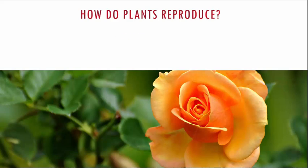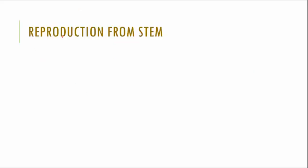When you look at reproduction in plants, plants reproduce either from their stem, from their leaves, from the roots, or from seeds. Let us look at them one by one. The first one we will be seeing is reproduction from stem.